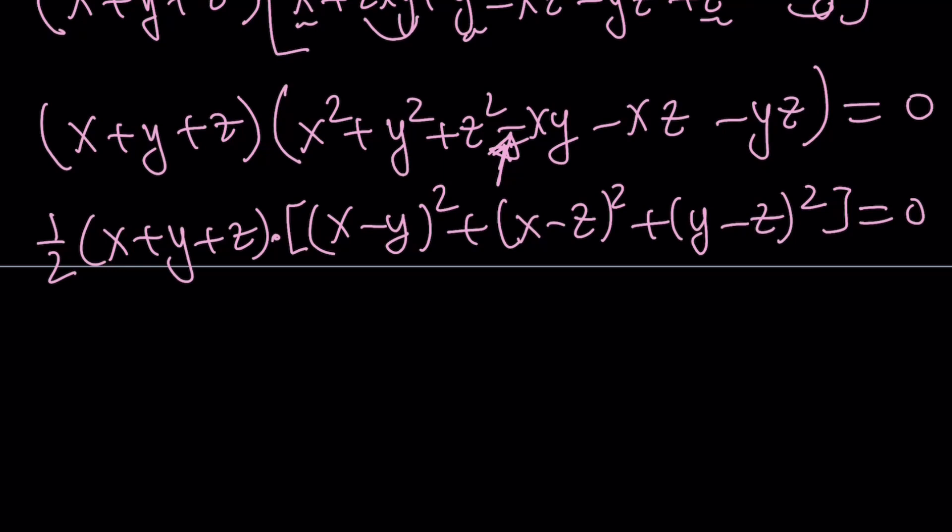And now, by setting this equal to zero, notice that this, if x and y, z are different, this is not going to be zero. Therefore, this has to be zero, which means x plus y plus z equals zero.